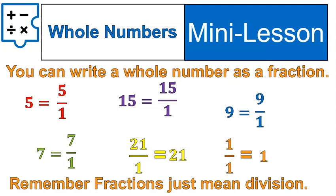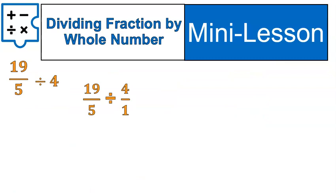So when we're dividing by whole numbers, all we need to do is change them into a fraction over 1 and then do the same steps that we've done up to this point. Let's take a look. So if I'm given 19 over 5 divided by 4, I would rewrite it as 19 over 5 divided by 4 over 1. That is it. Literally, that is the only difference.